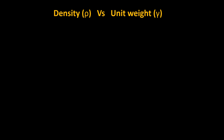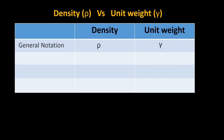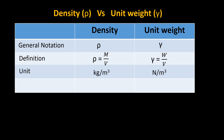Density rho versus unit weight gamma. General notation of density is rho (ρ); general notation of unit weight is gamma (γ). Definition: density ρ equals mass over volume; unit weight γ equals weight over volume. Unit of density is kg/m³; unit of unit weight is N/m³. Unit weight is also called weight density.